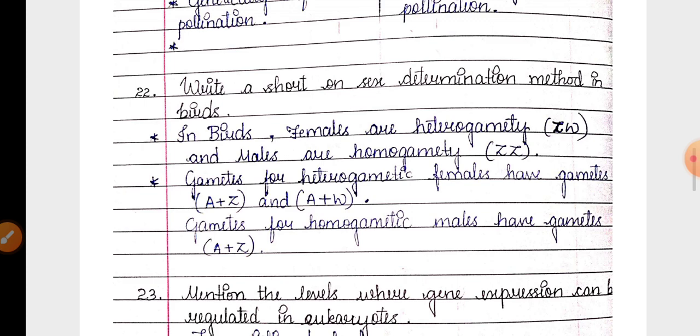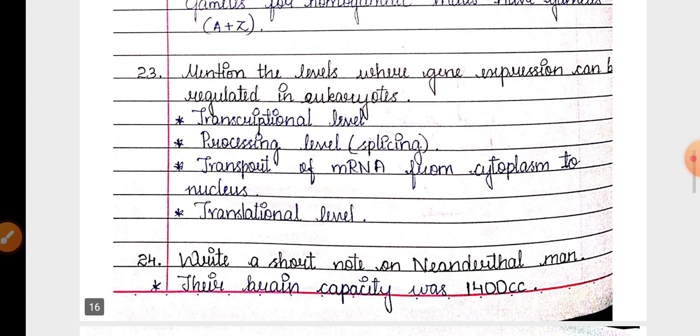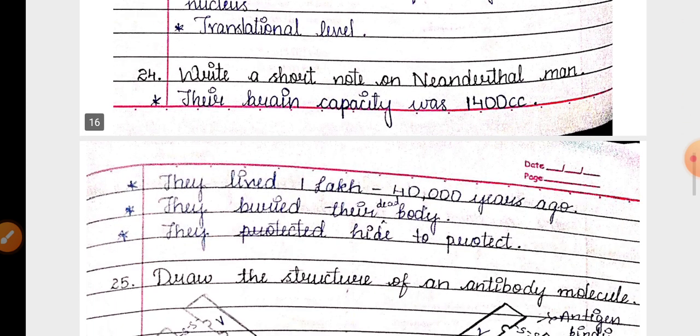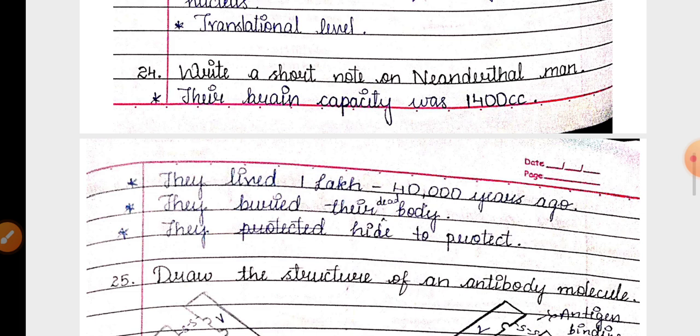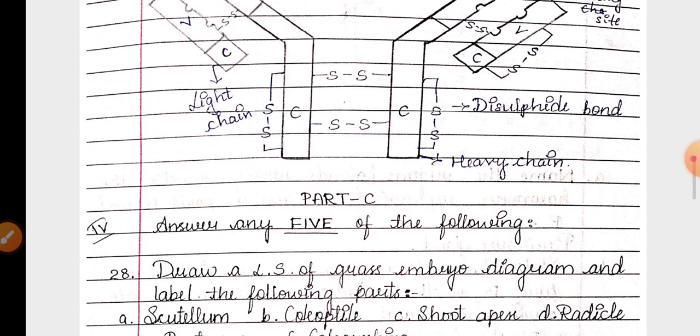And even filling the blanks also has been mentioned. In part B, first question is difference between geitonogamy and xenogamy. Then sex determination in birds, ZZ ZW type levels to regulate gene expression in eukaryotes. 23rd question, 24th question about the features of Neanderthal man. 25th question, structure of antibody molecule.